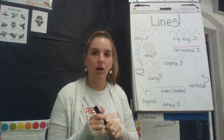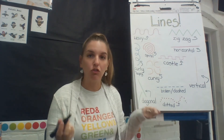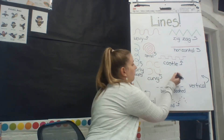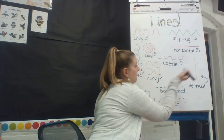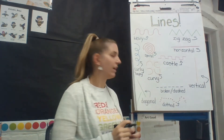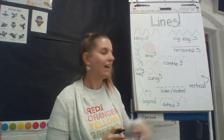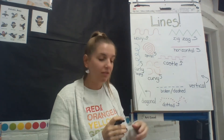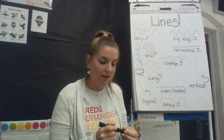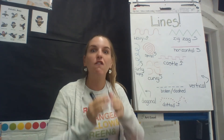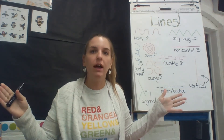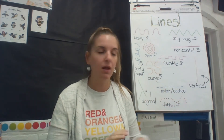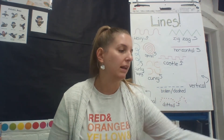If I were to take my marker and I wanted to make the shortest line possible, I could just go right there. That little dot right there is the shortest possible line. A line could also go on infinitely forever and ever and ever and never stop. They could do anything.